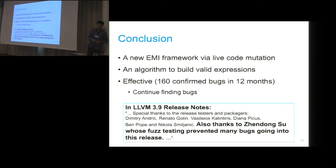In this work, we propose a new EMI framework with live code mutation. We also propose an algorithm to build valid expressions so that we can nicely address the challenges introduced by the mutation of live code. Our evaluation is pretty effective. We found 160 confirmed bugs in GCC and LLVM over 12 months. We continue finding bugs. At the end of the talk, I would like to stress that our contribution and testing efforts have been received and acknowledged in the LLVM community. This is quoted from the LLVM 3.9 release notes. Thank you.